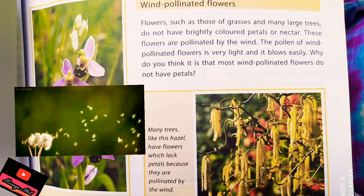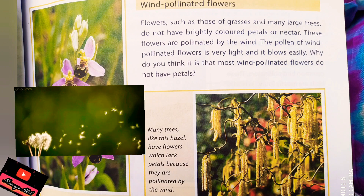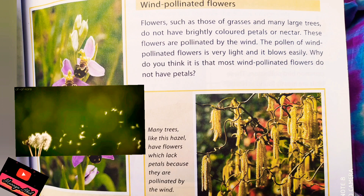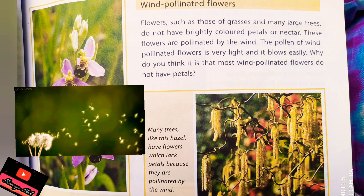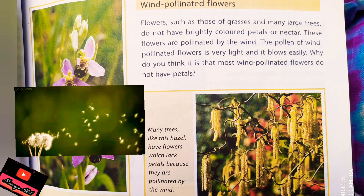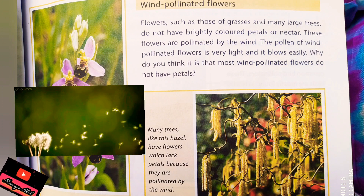Now we will study wind-pollinated flowers. Flowers that are not very beautiful are mostly pollinated by wind — these include grasses and many large trees. They don't have bright petals, nectar, or scent. The pollen of wind-pollinated flowers is very light so it blows easily. They are also produced in large amounts, and the large feathery stigmas catch these light pollen grains.